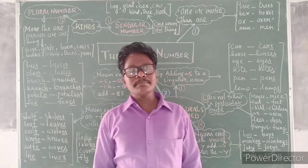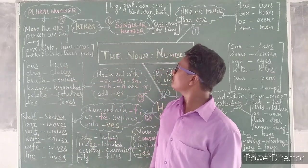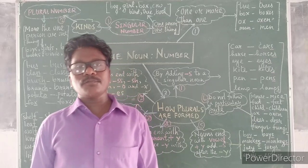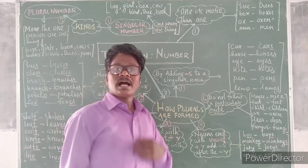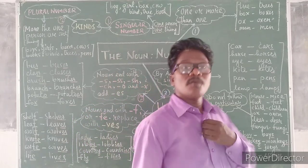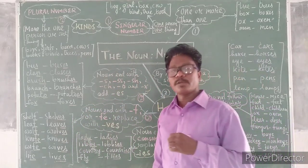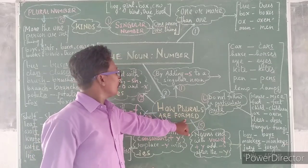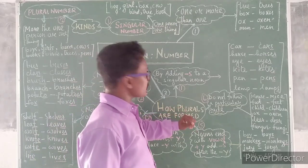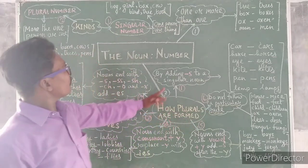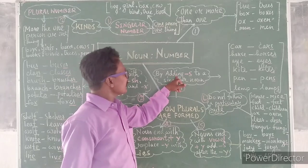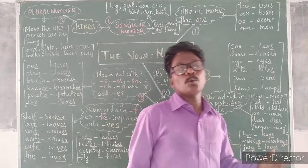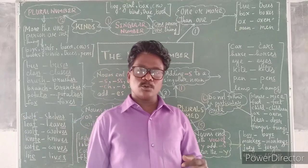So that is plural nouns or number. There are many ways how we form a plural noun. Let us look at some of the ways of its formation. Let us go one by one. So here we see how plurals — or plural numbers or plural nouns — are formed.